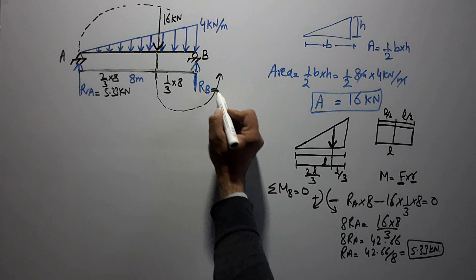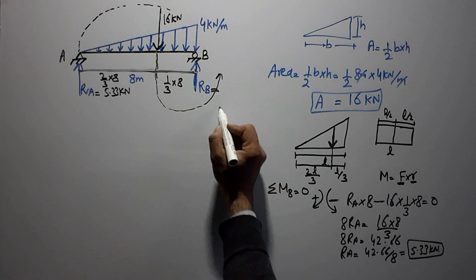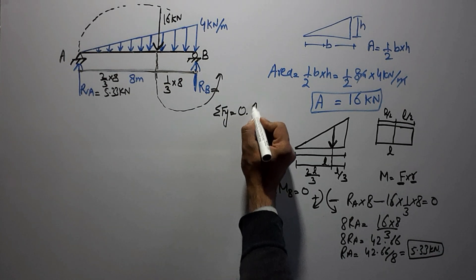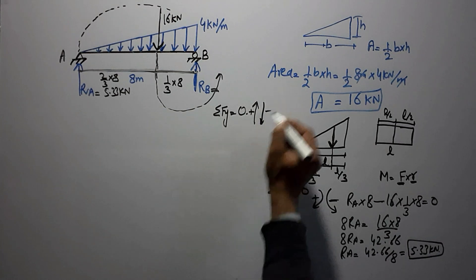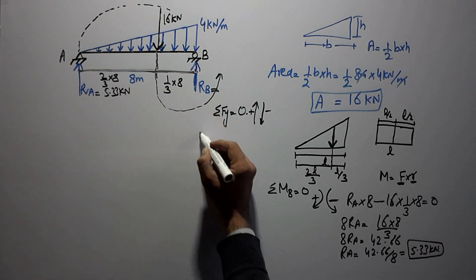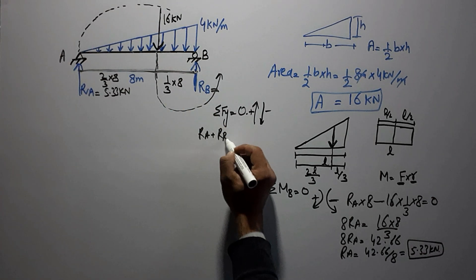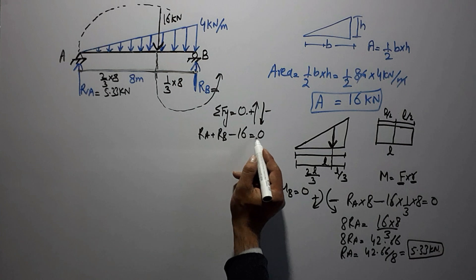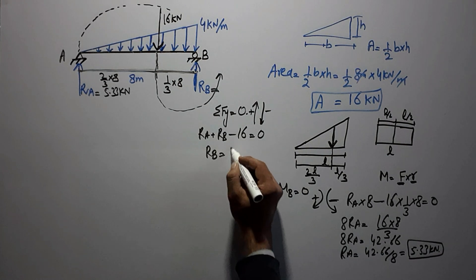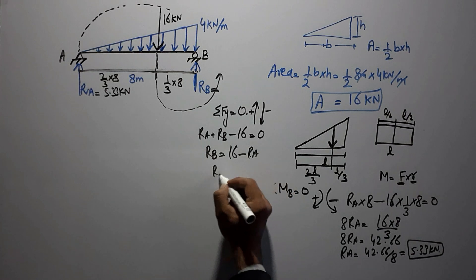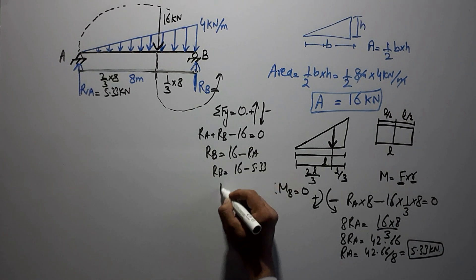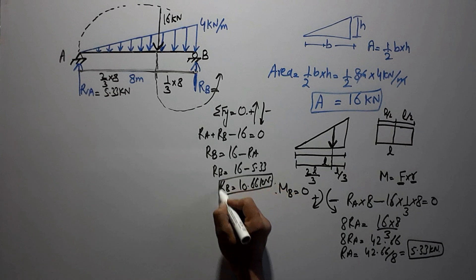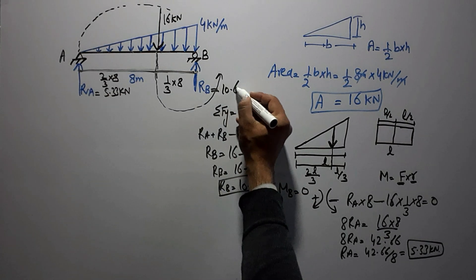To find RB, we use the summation of all vertical forces equal to zero. Upward forces are RA and RB; the downward force is 16 kN. Therefore RB = 16 − RA = 16 − 5.33 = 10.66 kN. So the reaction at support B is 10.66 kN.